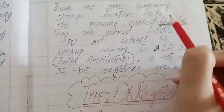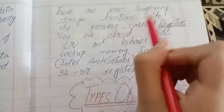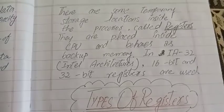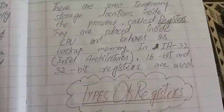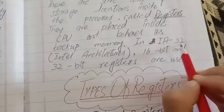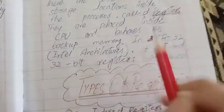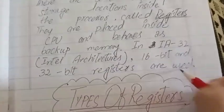What is the register basically? There are temporary storage locations inside the processor used to hold data temporarily. In IA32 Intel architecture, 16-bit and 32-bit registers are used.